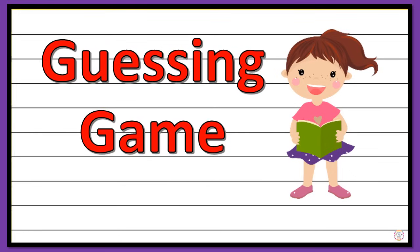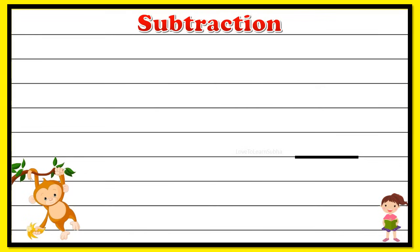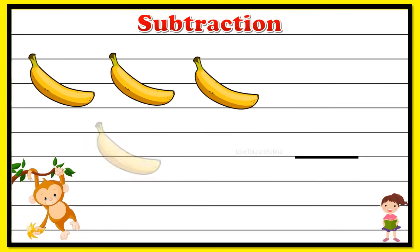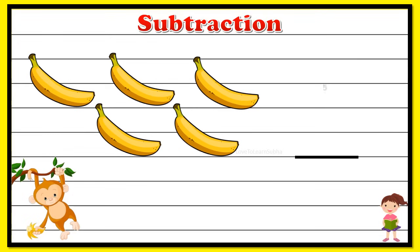Now let's play a guessing game. I'll be giving you some pictures and you have to find the difference. I'll give you the total number of objects, and you have to subtract a particular number and find the remaining balance. Here is our first example: we have one, two, three, four, five — so totally five bananas. Three bananas are taken away by this monkey, so we write it as minus three. Now you have to find the balance bananas.